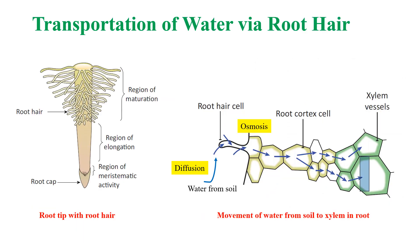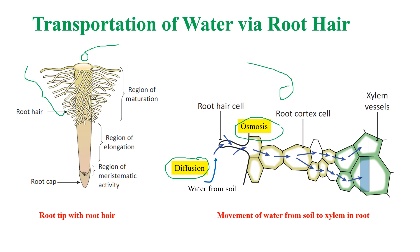Now let us see how water is transported from root hairs to other regions of the plant. This is the structure of a root, and these are the root hairs. This figure shows the movement of water from soil to xylem in the root. The root hair cells absorb water from soil by diffusion. When water enters the root hair cells, the concentration of water in the root hair becomes higher than that of the cortical cells, which results in osmosis and leads to the movement of water from root hair cells to the cortical cells and then to the xylem. From the xylem, water will be transported to stems and leaves.